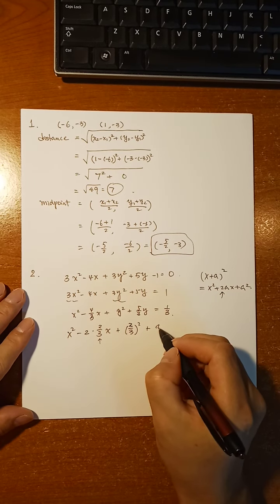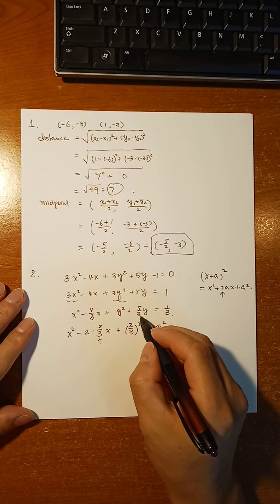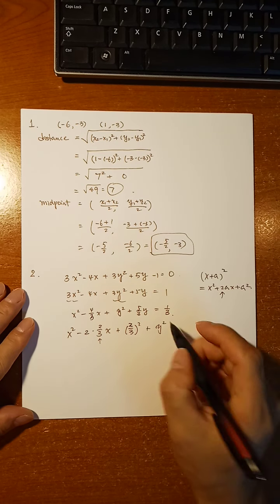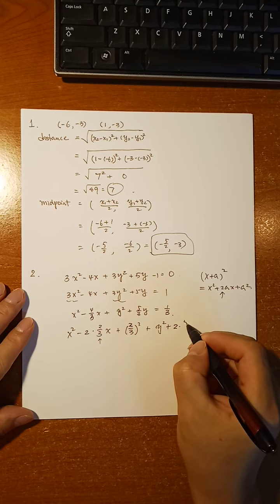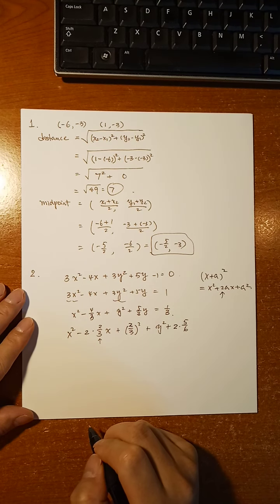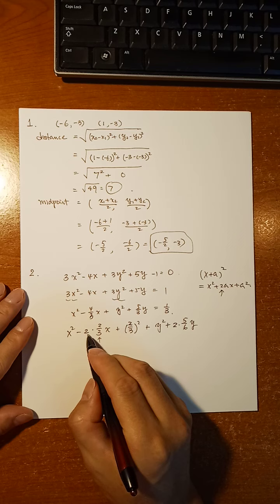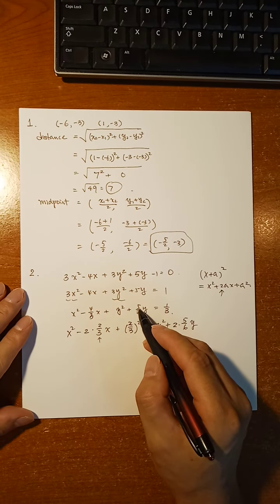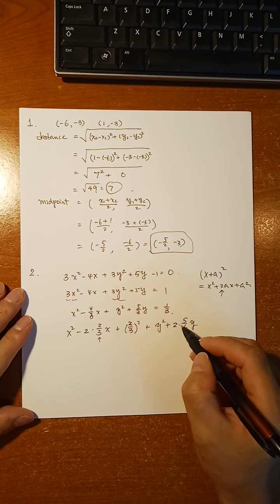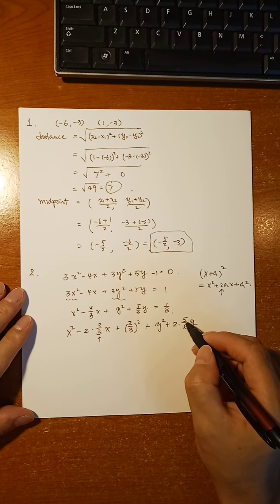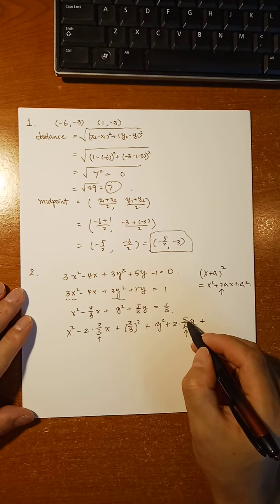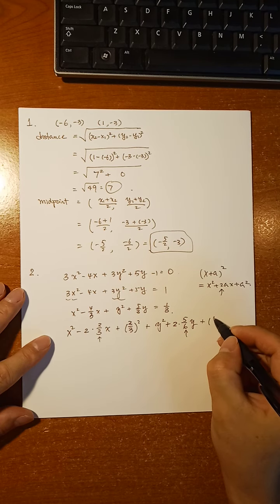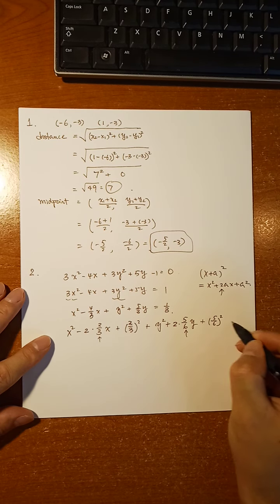For the y terms, we have 5 over 3. The numerator does not contain a factor of 2, so when we put the coefficient 2, we divide by 2. If you can factor out a 2, you don't need the division, but if you cannot, then you divide. So 2 cancels with 2 from the denominator, and you still have 5 over 3. In this case, 5 over 6 is the quantity a in the formula, so we add (5 over 6) squared.